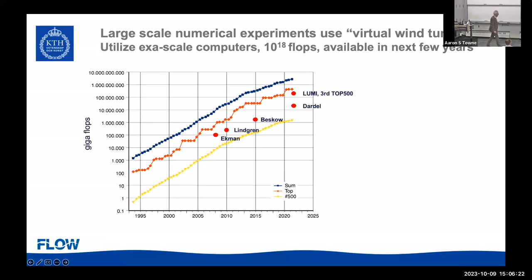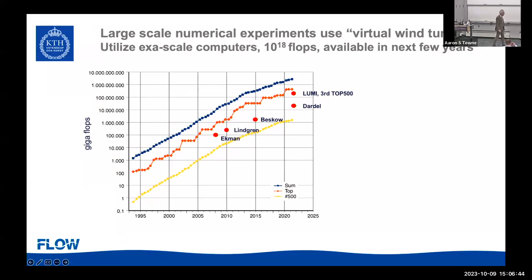Just to show you that we do have some computers in Sweden — these rounded dots are Swedish computers, a little lower on the list. The most recent one is called Dardell, about 10 to 20 petaflops. There's also a computer in Finland called Lumi, which is a consortium of European countries — it's actually third on the top 500 list right now, and we're able to run on that one. I'll show a scaling picture from it.